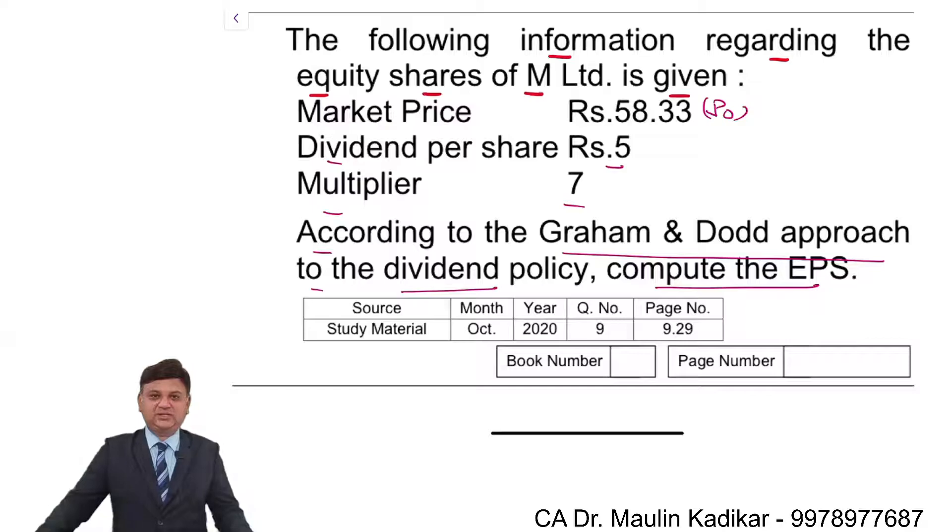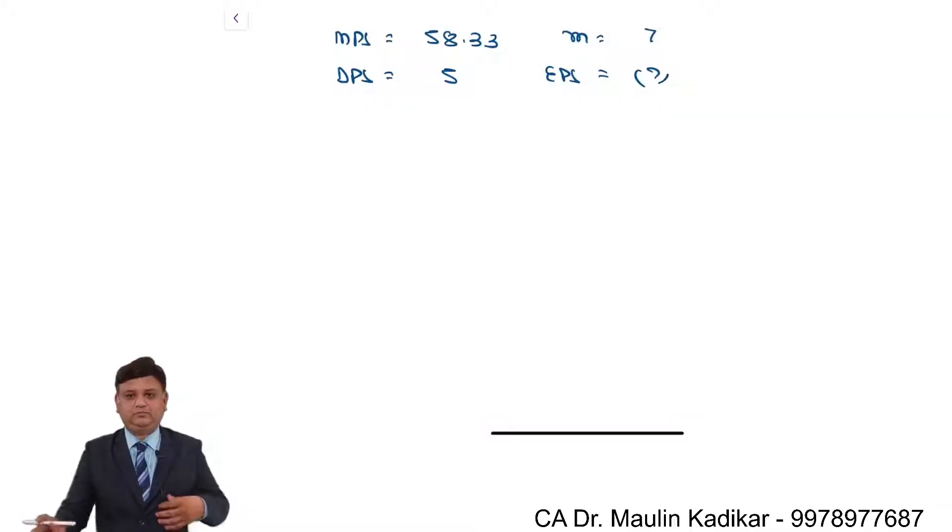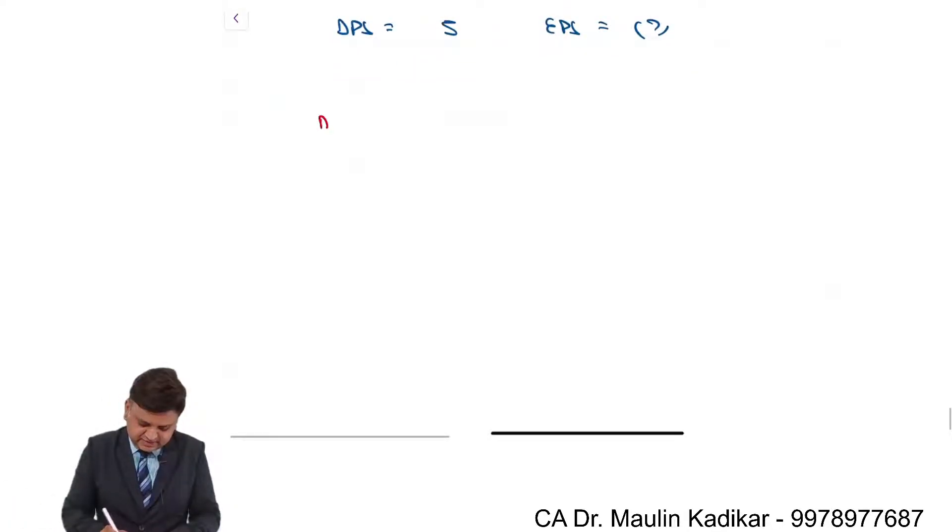Let us have understanding how to make the calculation of answer. The formula is MPS is equal to multiplier into DPS plus EPS upon 3.